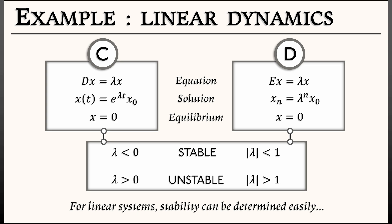And the boundary between these two cases, this is where we have degenerate equilibria. In continuous time, lambda is zero. In discrete time, lambda is one in absolute value. That is plus or minus one.